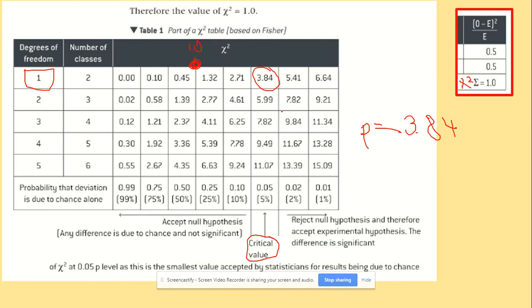So what we can conclude from here is the fact that this is 5% and our chi-squared test come up as here, between 50 and 25%. So that means that we can accept the null hypothesis and any difference is due to chance alone.